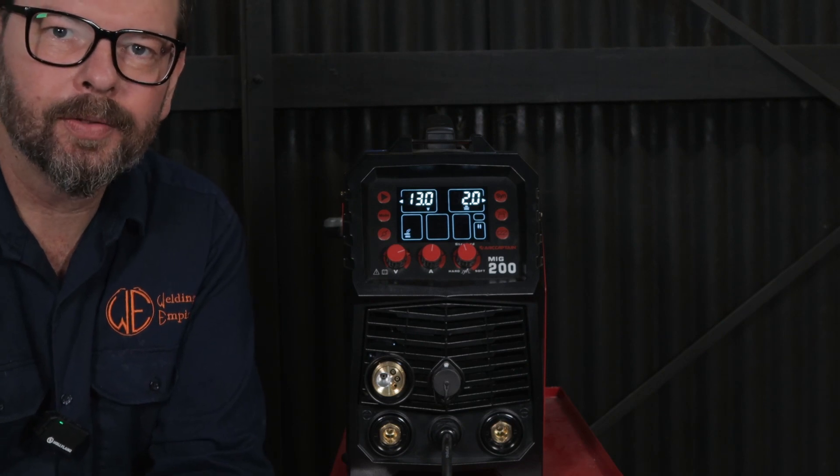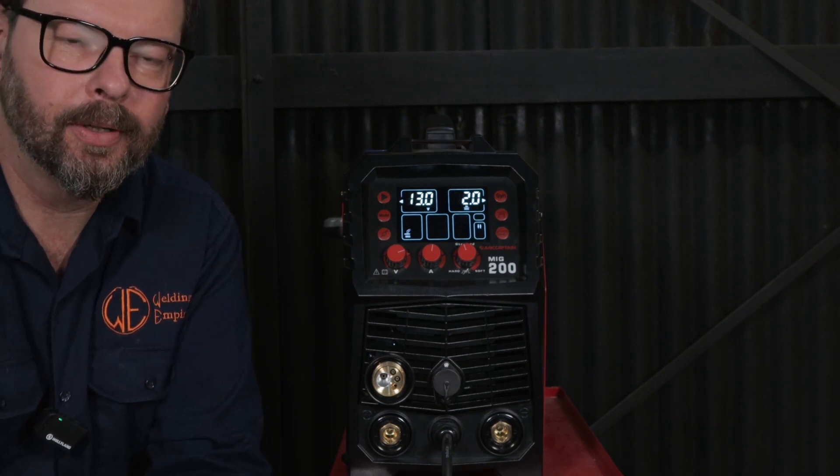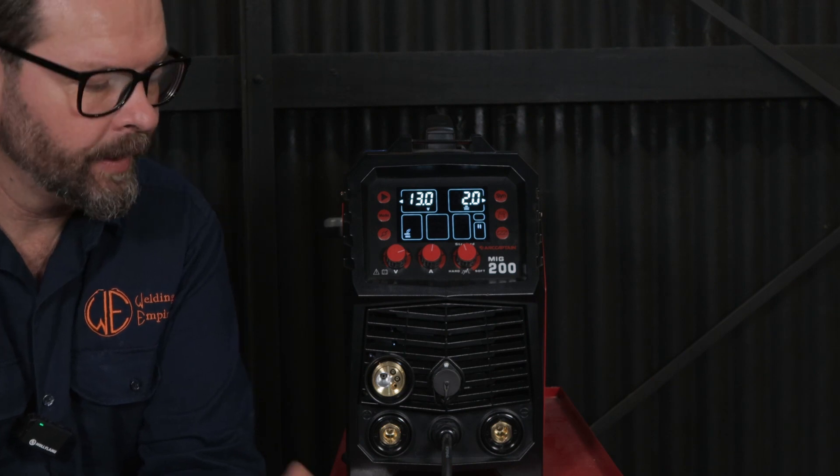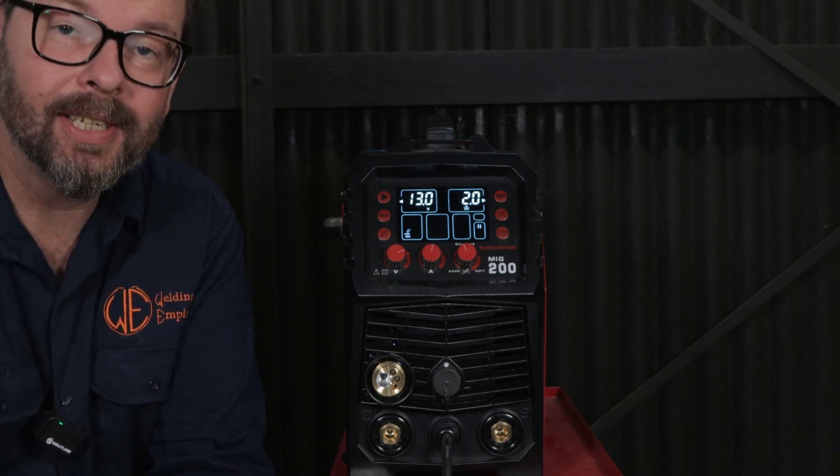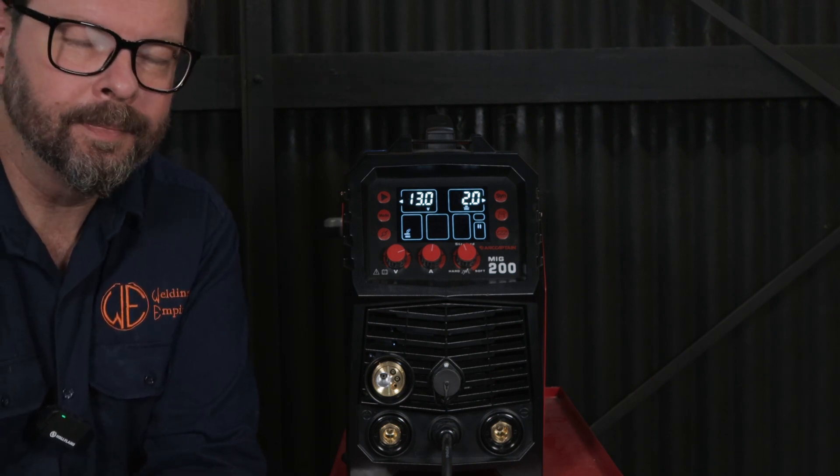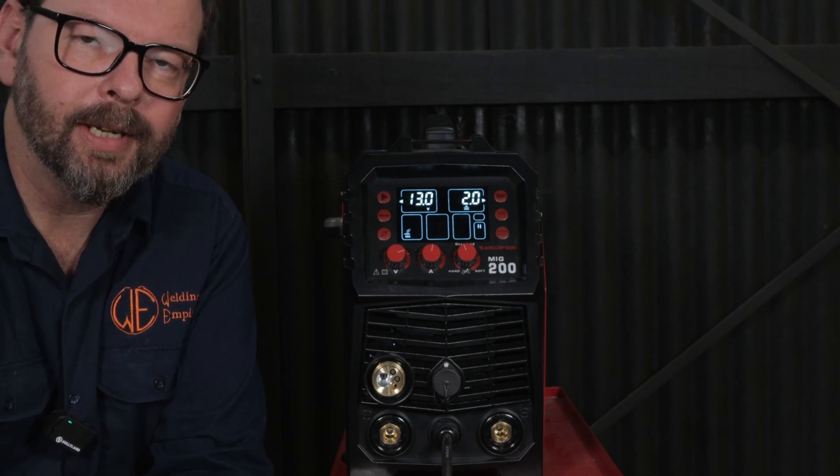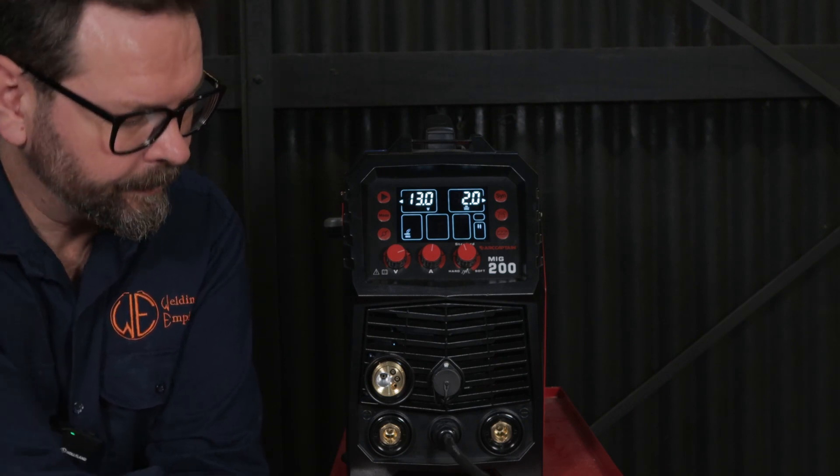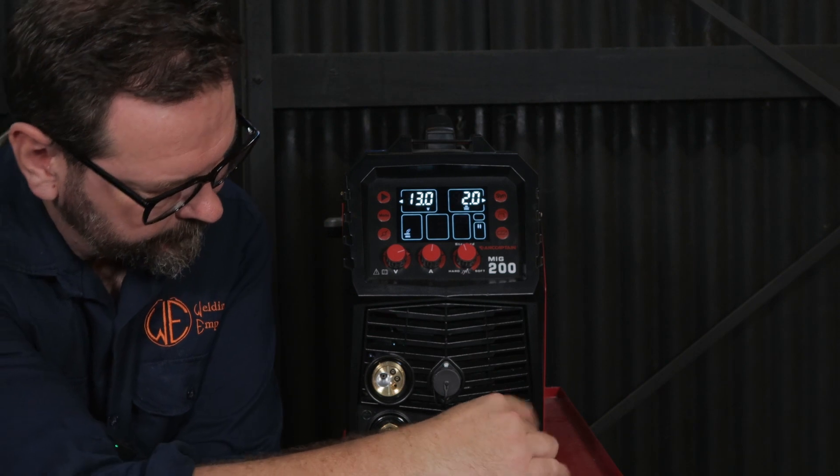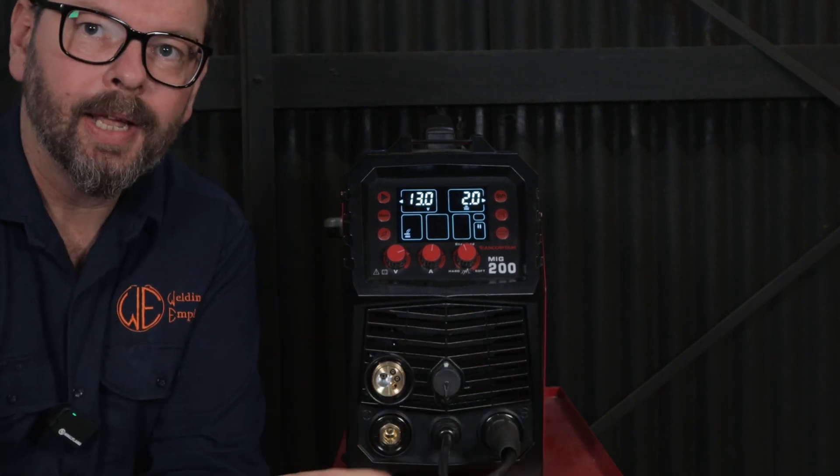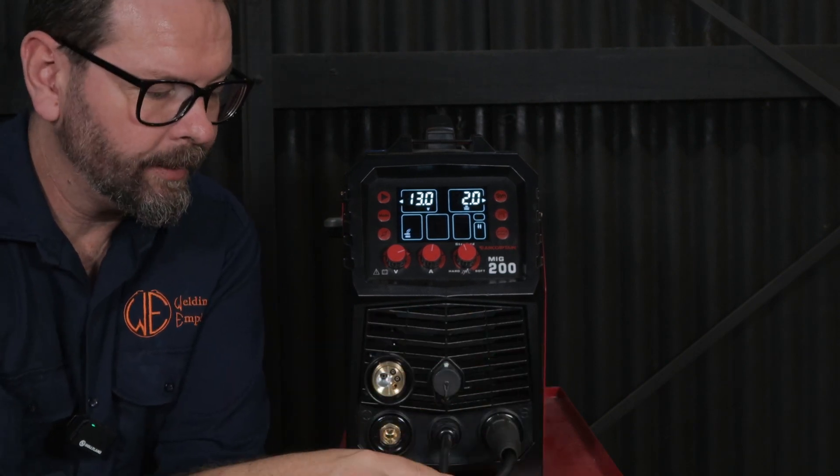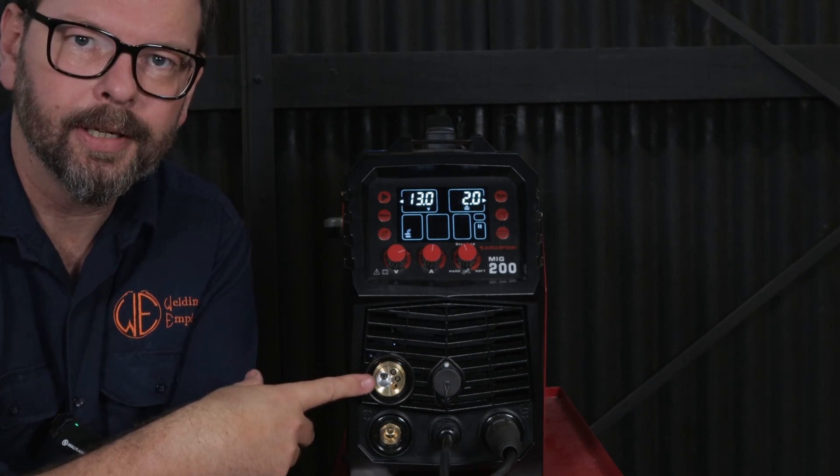This machine here has what's known as a polarity switching cable, commonly called a pigtail. At the moment this welder doesn't identify with either polarity, so I'm going to be switching it over to negative for the flux core. So now it's going to be taking the negative and putting it into the Euro style fitting.